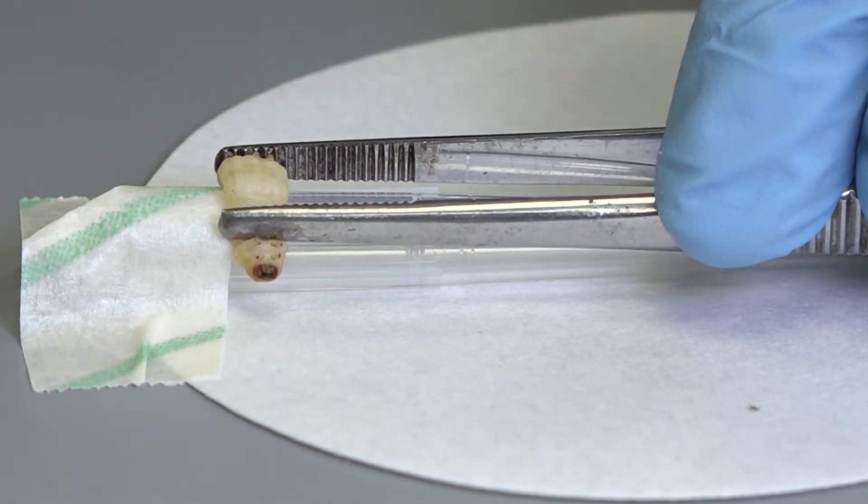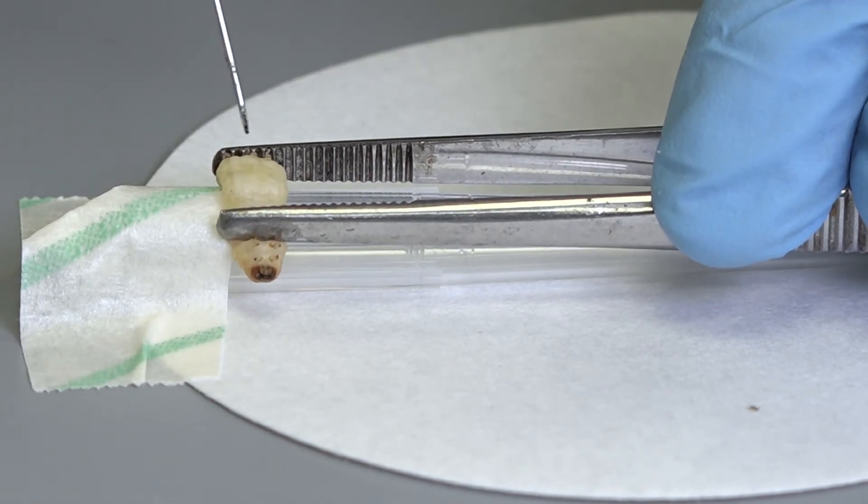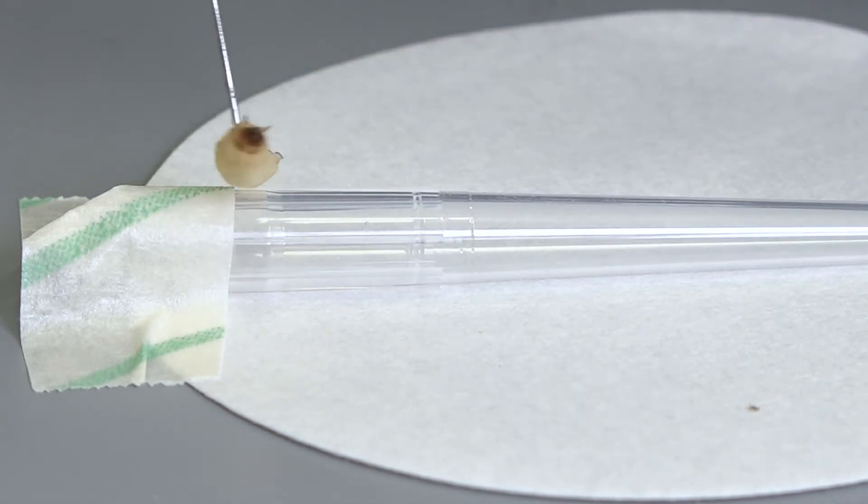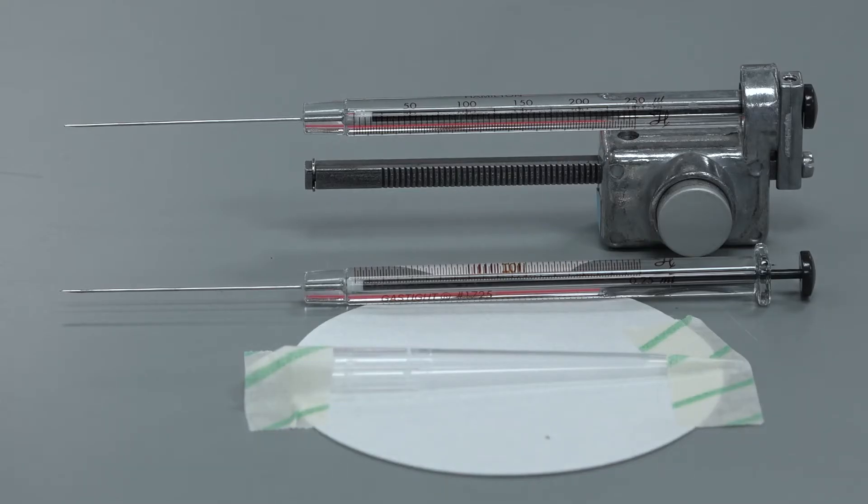Larvae are usually injected with a volume of 10 microlitres and we recommend using a Hamilton microsyringe to inject the larvae. An adapter may be used to automate multiple injection volumes. Using a 250 microlitre volume Hamilton microsyringe, a double click of the adapter will dispense 10 microlitres. Using this adapter we can inject 25 larvae with 10 microlitre doses within minutes.